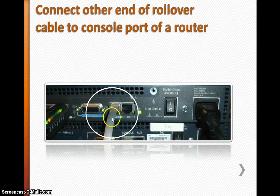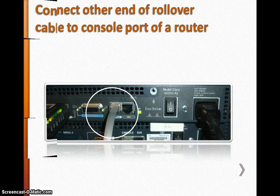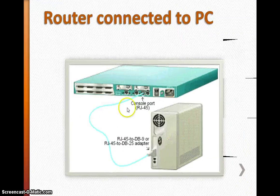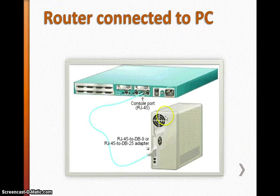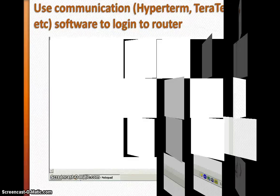Connect the second end of the console cable to the router console port. Now the router is connected. This is the final picture: your PC is connected to the console port on the router.